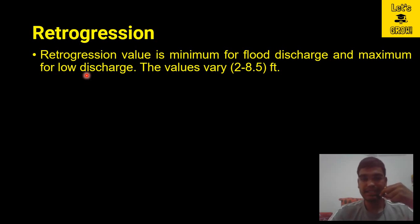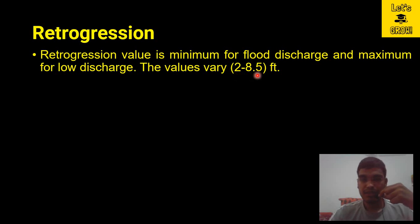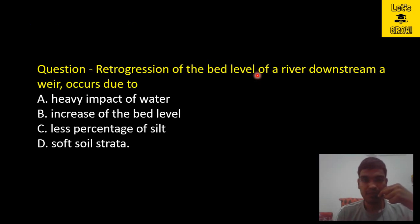For low discharge, the retrogression process will be maximum, and the values vary from 2 feet to 8.5 feet. So the retrogression can erode the bed of the river by up to 2 feet to 8.5 feet.